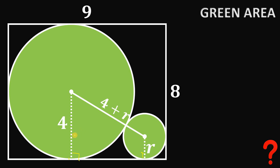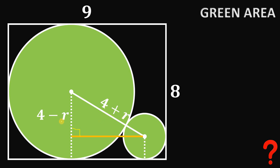Next, let's draw a perpendicular line to the radius of the big circle. The measure of this segment is the radius of the big circle minus the radius of the smaller circle, which is 4 minus R. We now have a right triangle with hypotenuse 4 plus R and one leg of 4 minus R. We want to find the measure of the remaining segment, so let's call it X, and we'll use the Pythagorean theorem.